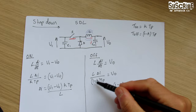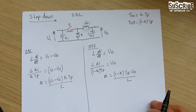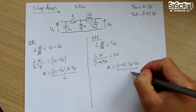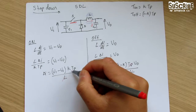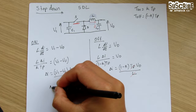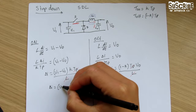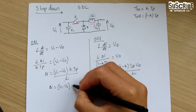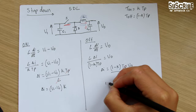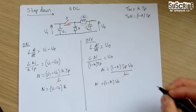To get rid of T_P and L — as we did before — L cancels and T_P cancels. So what we are left with is: ΔI = (V_I − V_O)·K on the on side, and on the off side: (1 − K) = ΔI·V_out.